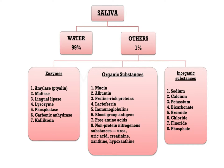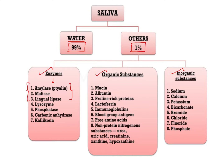Beginning with the composition: saliva is composed of 99% water, whereas only 1% is made up of other substances — but those other substances are the most important components, with numerous important functions. These include enzymes, organic substances, and inorganic substances. The most important enzymes are digestive enzymes like amylase, maltase, lingual lipase, and apart from that, lysozyme and phosphatase.